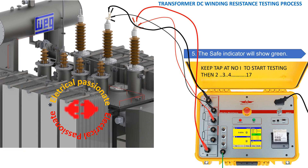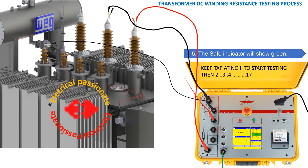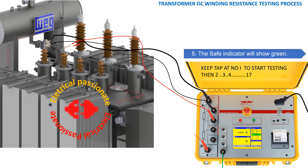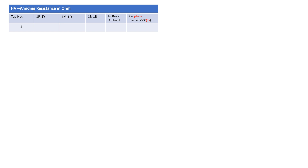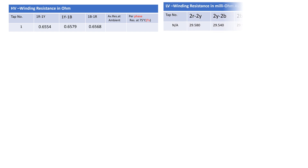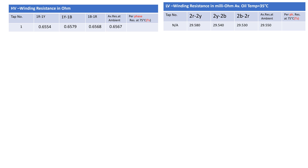Now the test on the LV side is conducted. We now have test results of the HV side at position 1 and the result of the LV side also. Now we calculate the resistance RS at the desired temperature of 75 degrees centigrade.